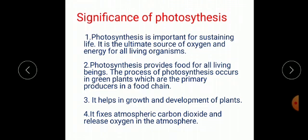The process of photosynthesis occurs in green plants, which are the primary producers in a food chain. It helps in growth and development of plants. It fixes atmospheric carbon dioxide and releases oxygen in the atmosphere.